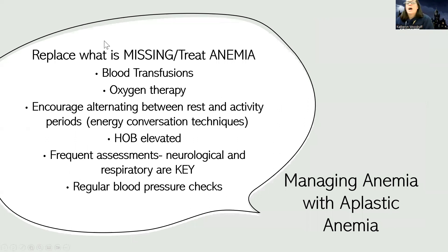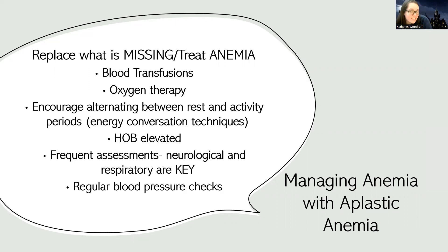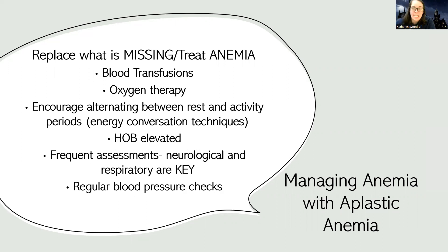Last, we manage the anemia the same way as other anemias: give blood transfusions as needed — remember, transfuse if hemoglobin is less than 7 — use oxygen therapy to support oxygenation, manage rest and activity, keep the head of bed elevated, perform neurological and respiratory assessments, do regular blood pressure checks, effectively supporting the loss, preventing more loss, and replacing as needed.